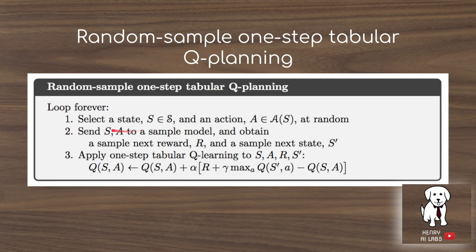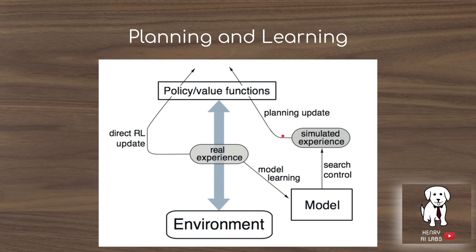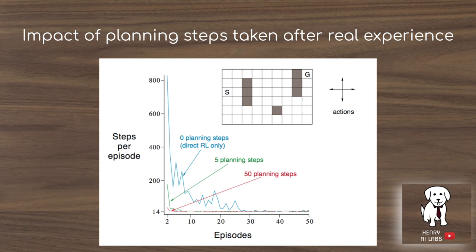Now we look at more details behind model-based learning, particularly search control and planning updates. Consider playing chess: you don't need an optimal value function for every possible configuration of pieces, since most states will never appear in a given game. This motivates prioritized sweeping and trajectory sampling — controlling how we plan our updates. This graph shows the effect of different numbers of planning steps: n=0 means learning only from direct experience with no model queries.